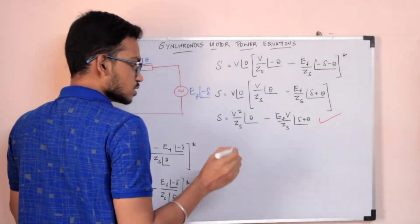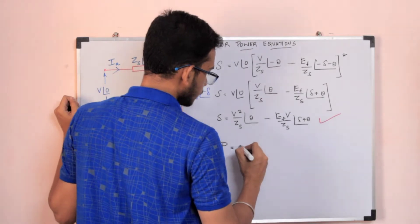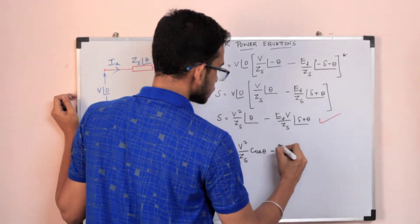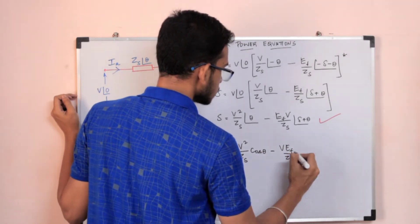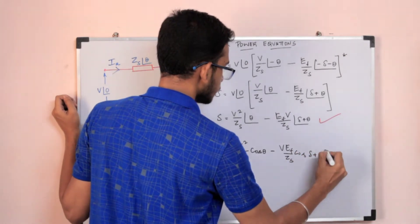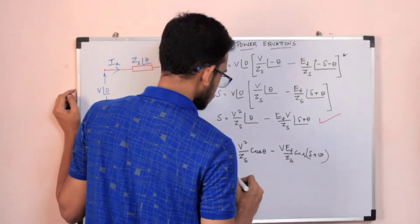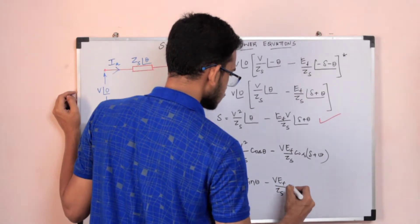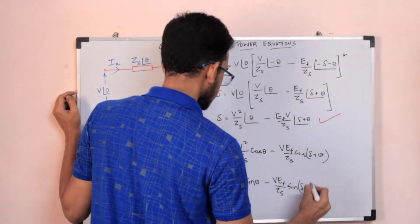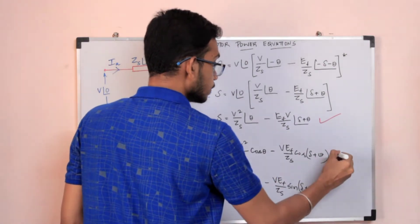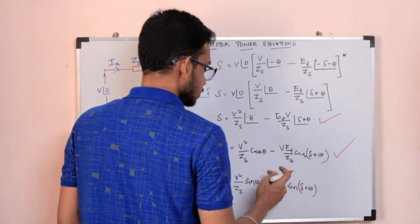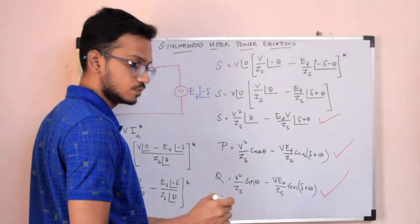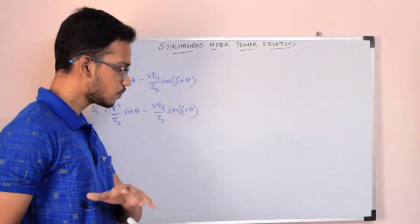For the P equation of the synchronous motor: P equals V squared by ZS times cos(theta) minus VEF by ZS times cos(delta plus theta). For the Q equation: Q equals V squared by ZS times sin(theta) minus VEF by ZS times sin(delta plus theta). These are the synchronous motor absorbed real and reactive power equations.